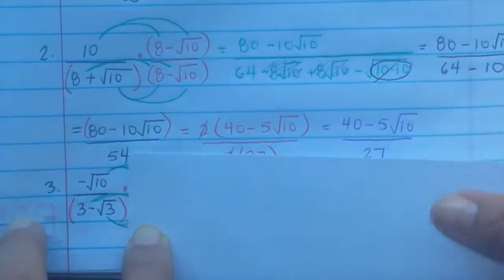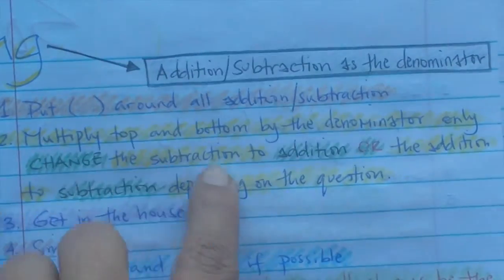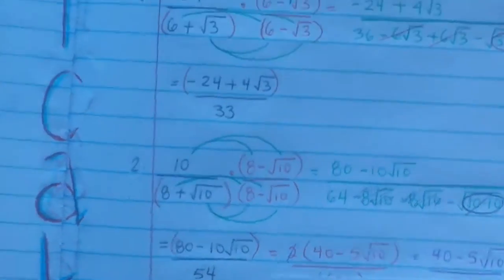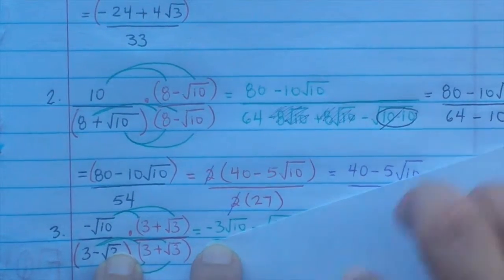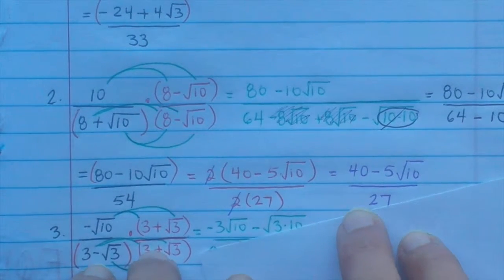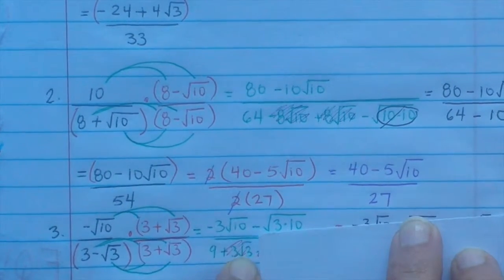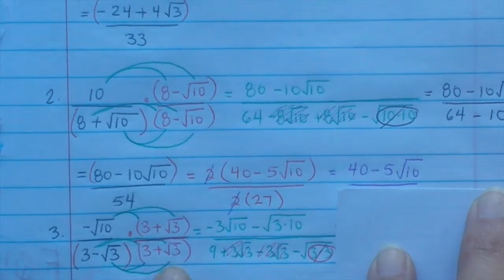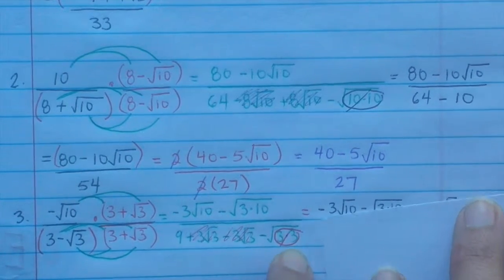Alright, number 3 — copy that down. We're going to change the sign: the denominator has subtraction, so we change it to addition. The exact same thing top and bottom, but now it's addition. Get in the house: negative radical 10 times 3 is negative 3 radical 10, and negative radical 10 times radical 3 gives negative radical 30 inside. Then 3 times 3 is 9. Say hi — 3 radical 3, then minus 3 radical 3. Then the last term is a book. Those two middle terms cancel, and we take the book out. The top stays the same, and on the bottom we have 9 minus 3.